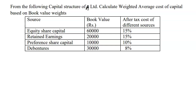They've given us the source of capital, book value, and after-tax cost of different sources. This is a very simple sum and it could be done much faster on Microsoft Excel, but since you all are going to be handwriting your papers, I'm going to be doing it along with you all.